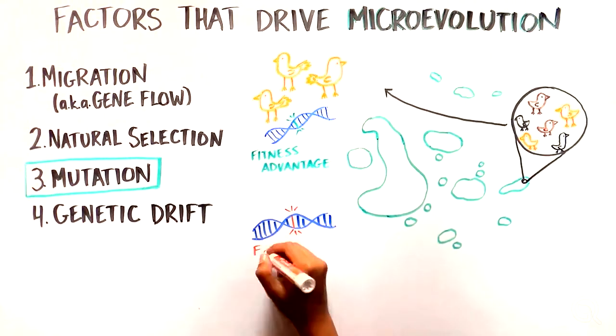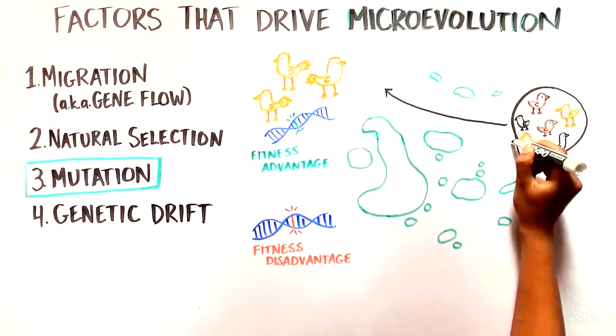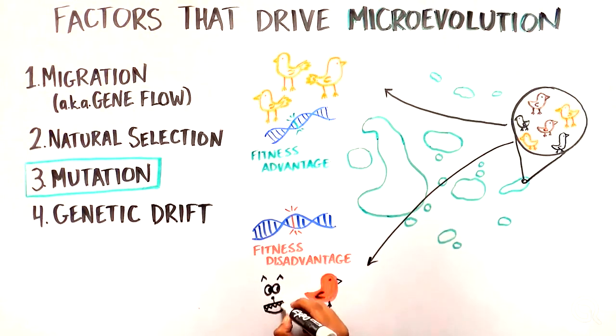If the trait is detrimental to the survival or breeding of an individual within a species, it is unlikely to be passed on. For example, a mutation that led to a brilliant red pigment on the birds might be disadvantageous because it would make those finches more visible to predators.